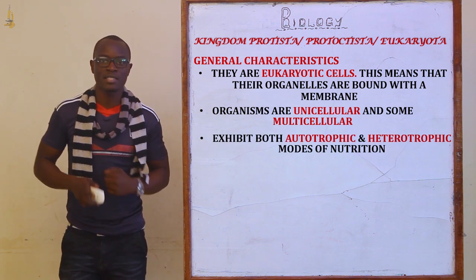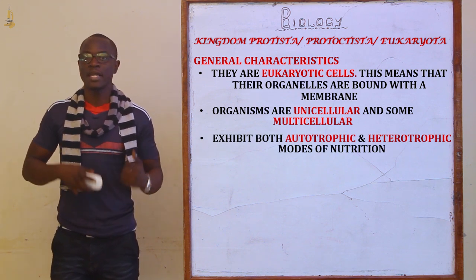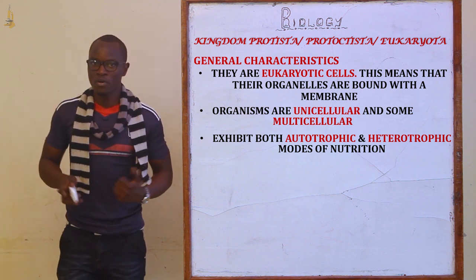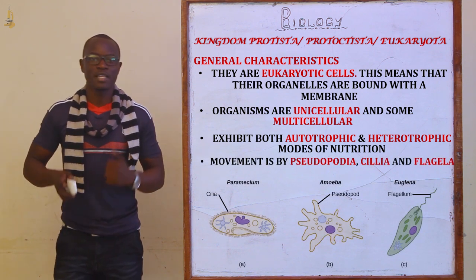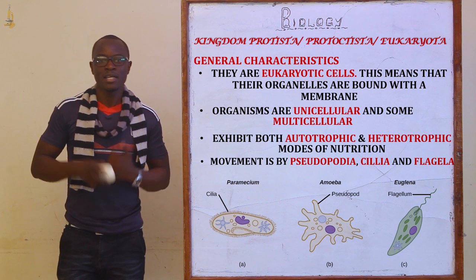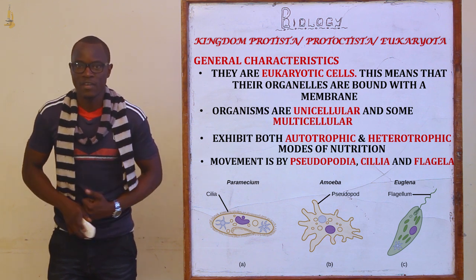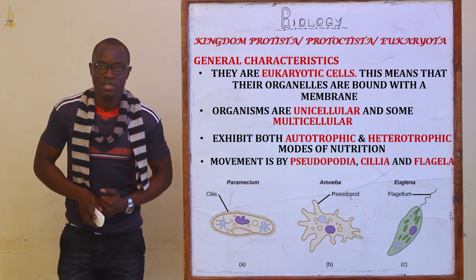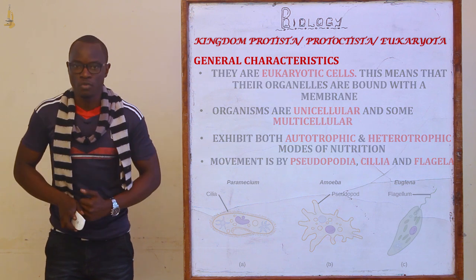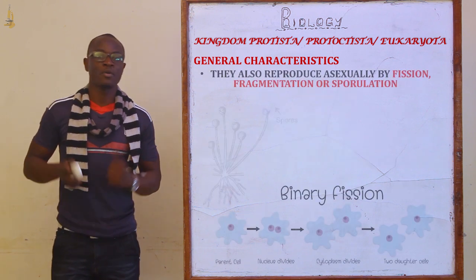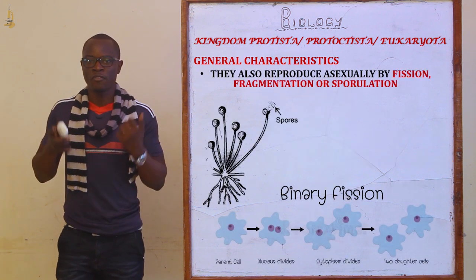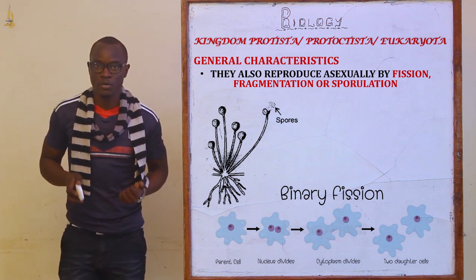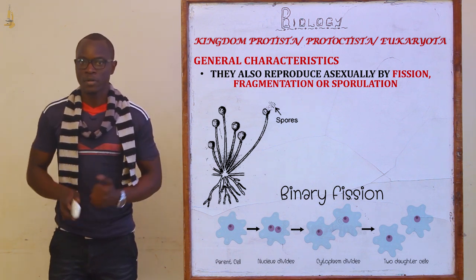The nutrition for this organism is basically autotrophic or heterotrophic mode of nutrition. They mainly move by pseudopodia, cilia, and flagella. Some of them are sessile, meaning that they cannot move. They reproduce asexually by either fission, fragmentation, or sporulation.